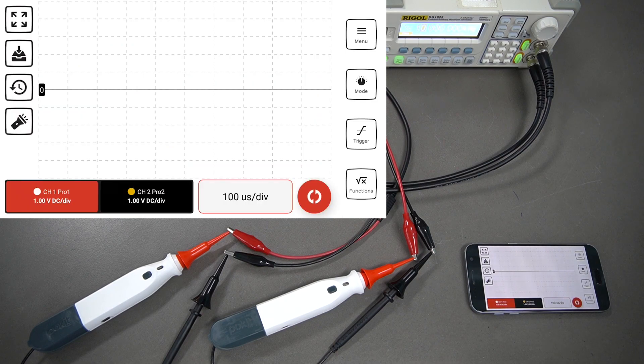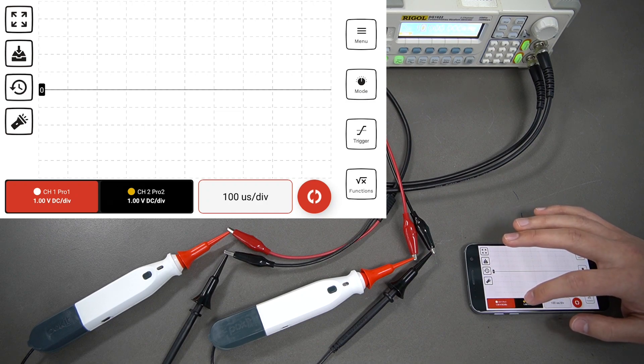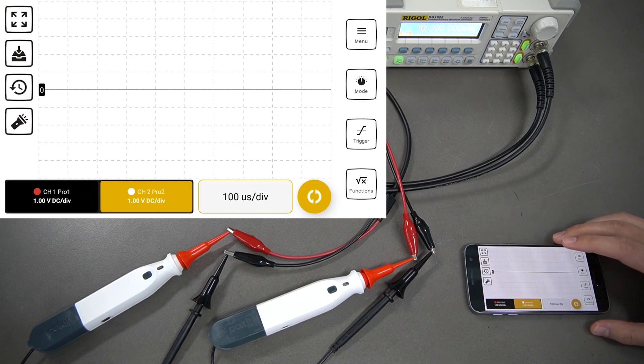Now we're in oscilloscope mode. You can see we've got two channels down the bottom here, channel 1 and channel 2. You can switch between the two by just pressing those there.